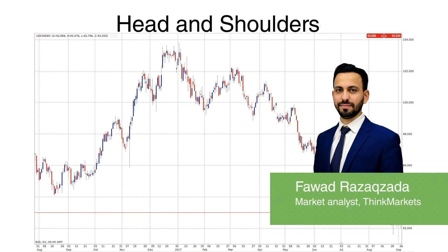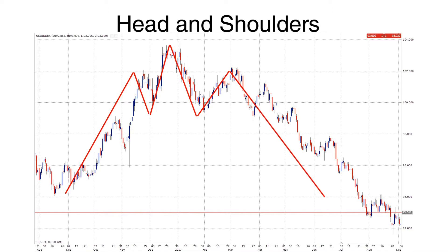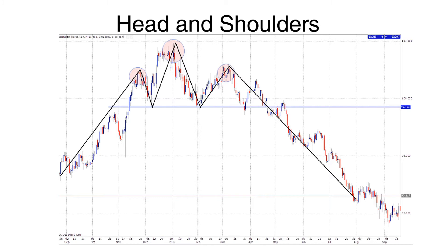The head and shoulders pattern occurs when a trend is in the process of reversing, either from a bullish or a bearish trend. It's among one of the key reversal patterns. This is how a bearish head and shoulders formation typically looks, and this is how a bullish formation would typically look. As explained in the previous videos in the key reversal series, the trend reversal pattern can be in the form of a false break, a double top or bottom, head and shoulders, or more commonly a combination of these formations.